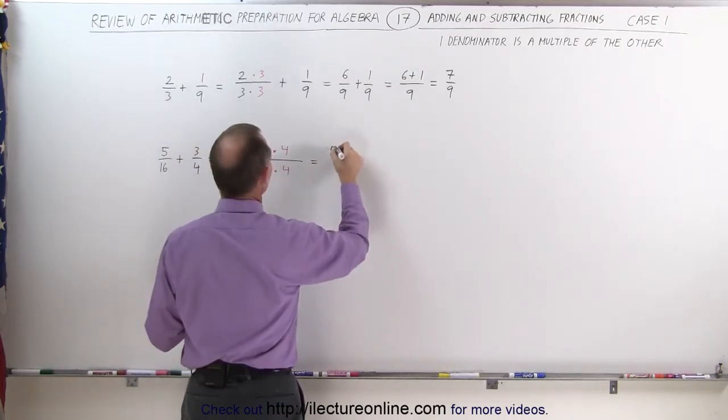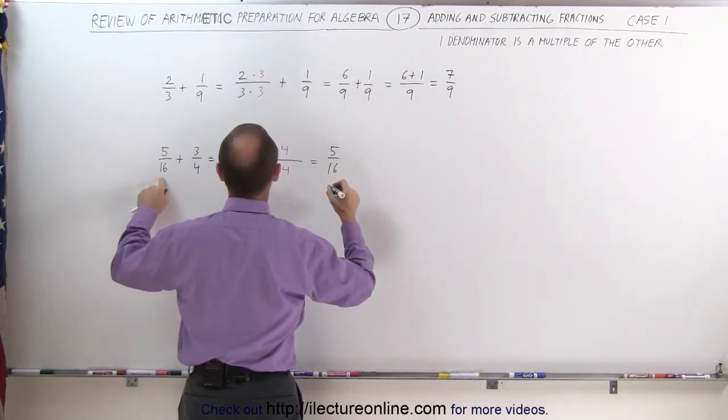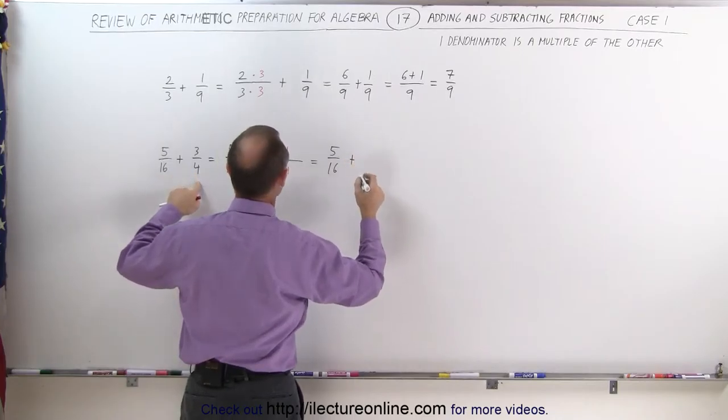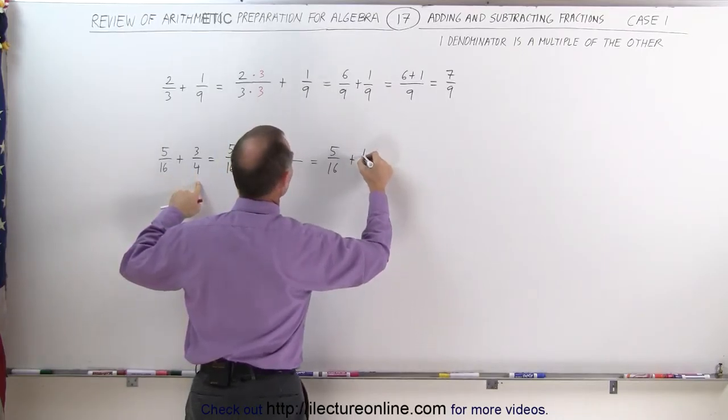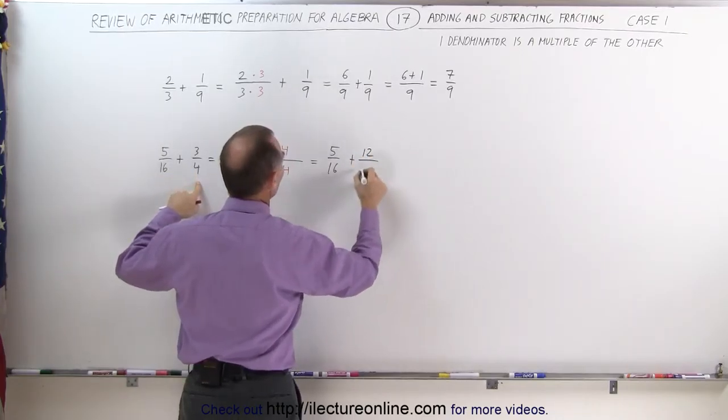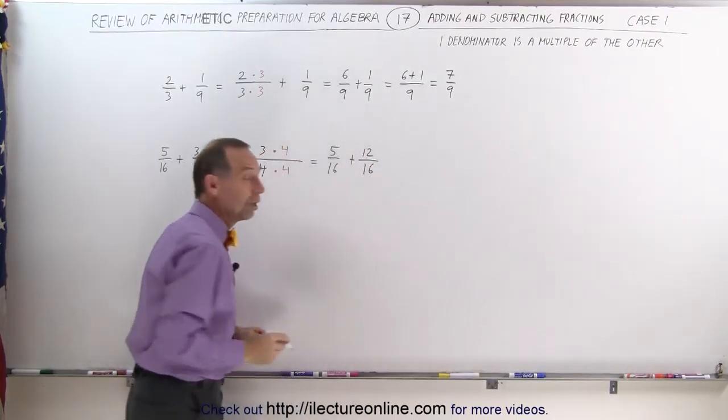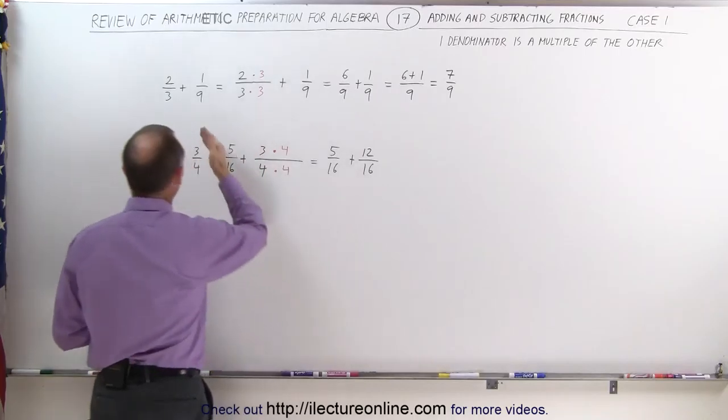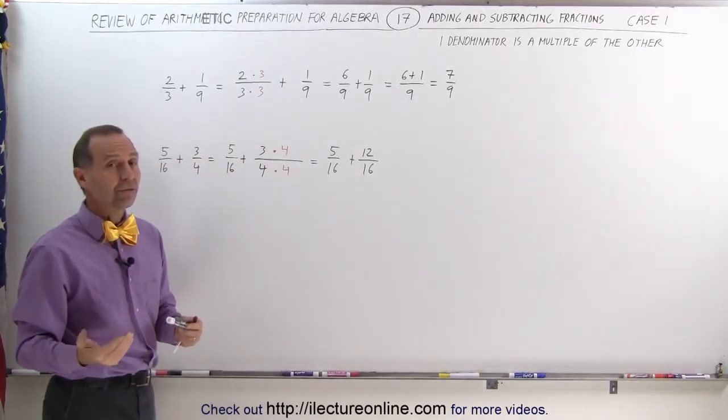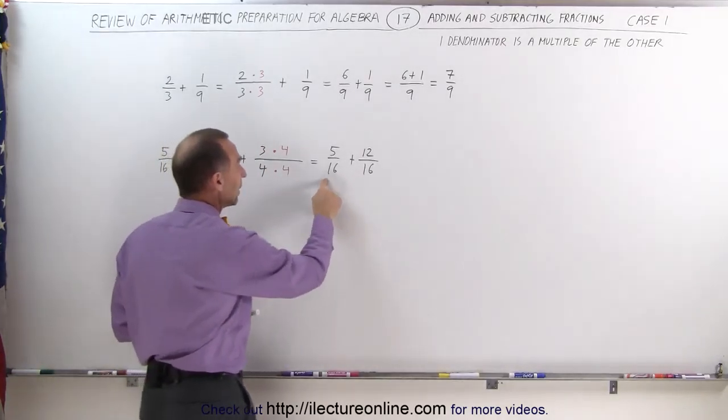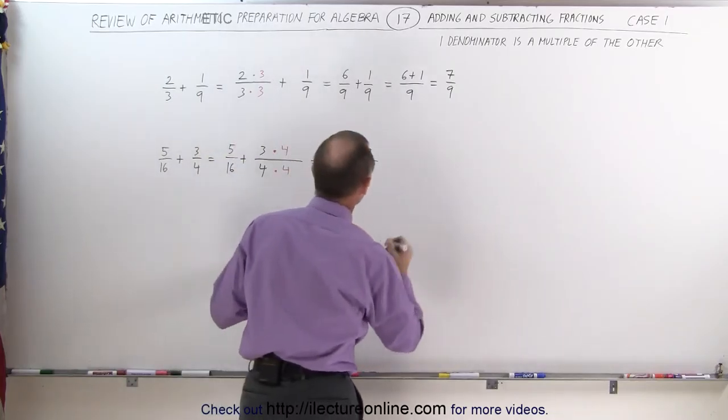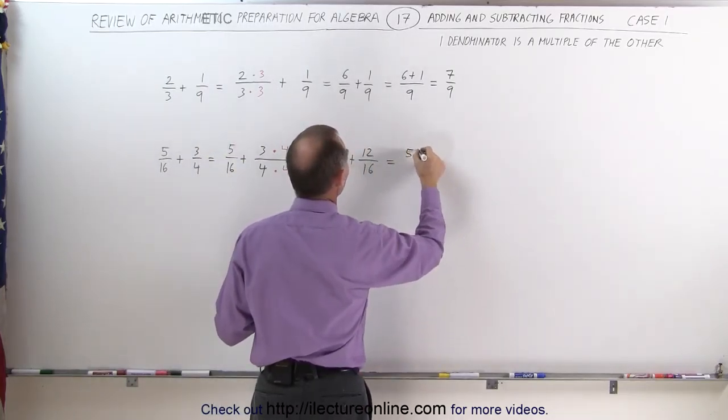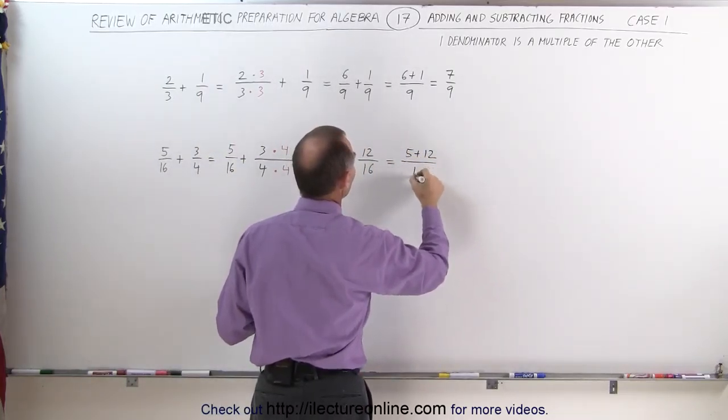I now end up with the following. I end up with 5 sixteenths, which is my original fraction here. But my second fraction now gets a different form. It's now 3 times 4 is 12, 4 times 4 is 16. Notice that 12 sixteenths is exactly the same as 3 quarters, just a different form. And now that I have the denominators the same, I can simply add them. This now becomes 5 plus 12 divided by 16.